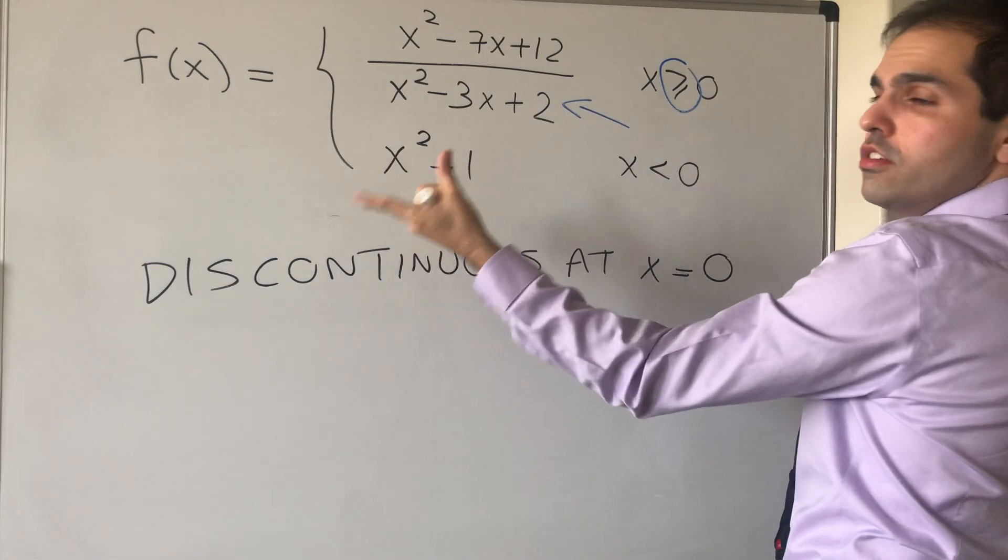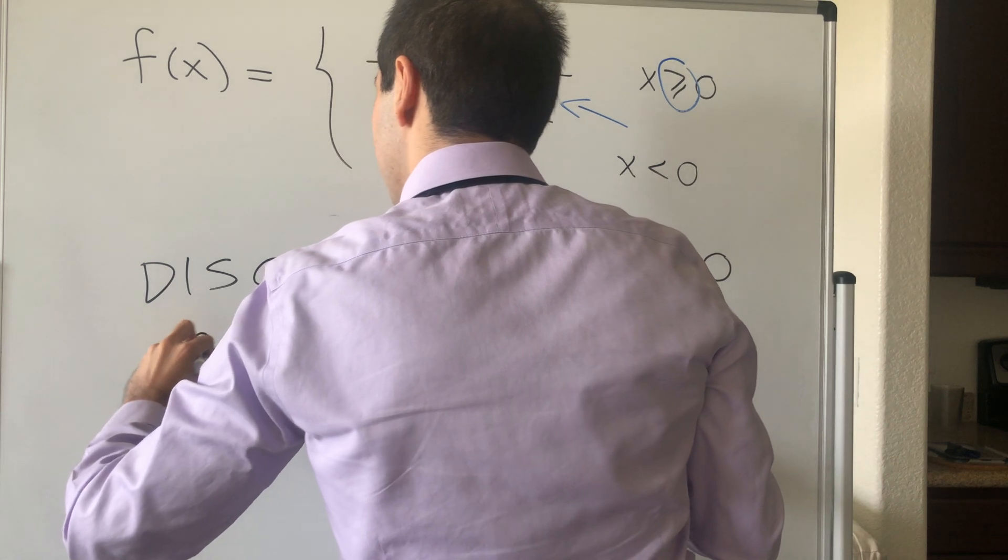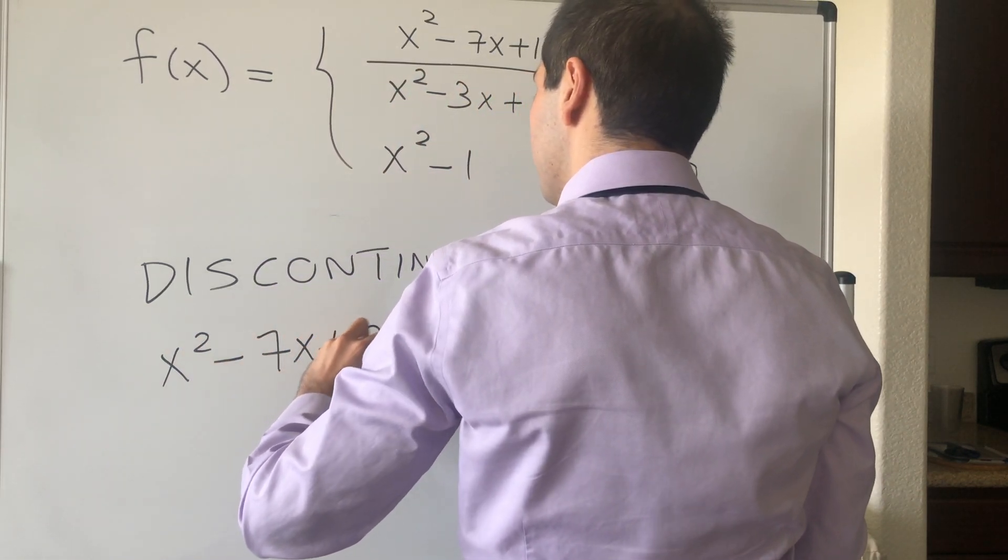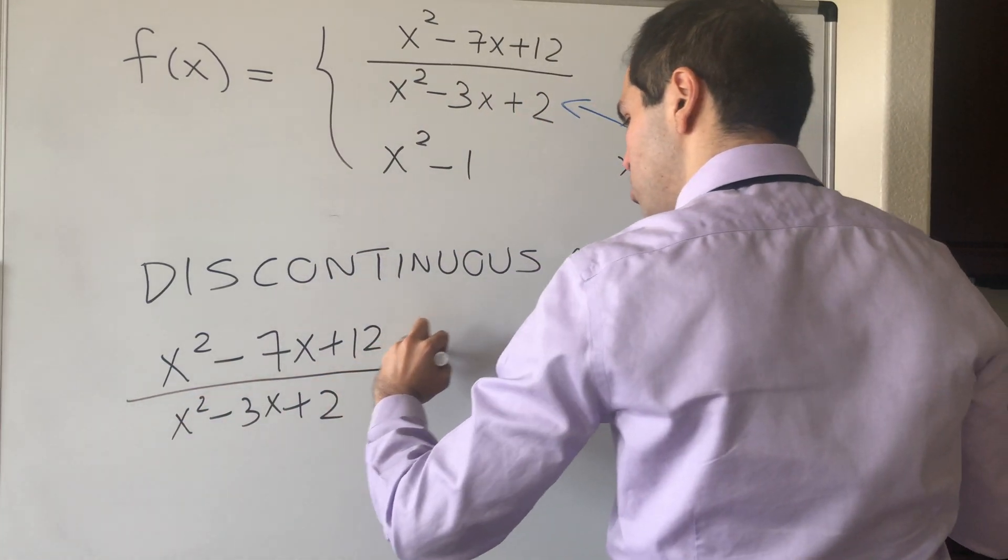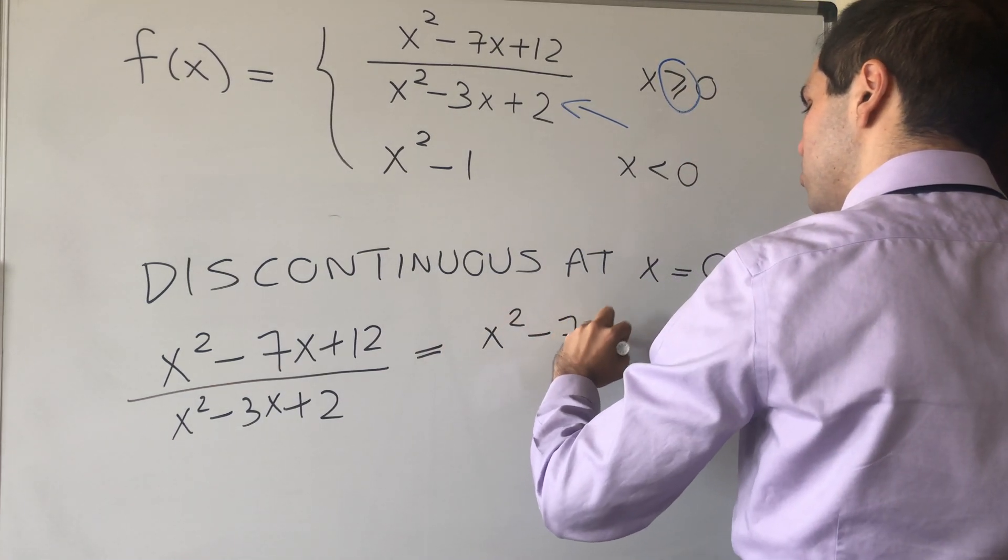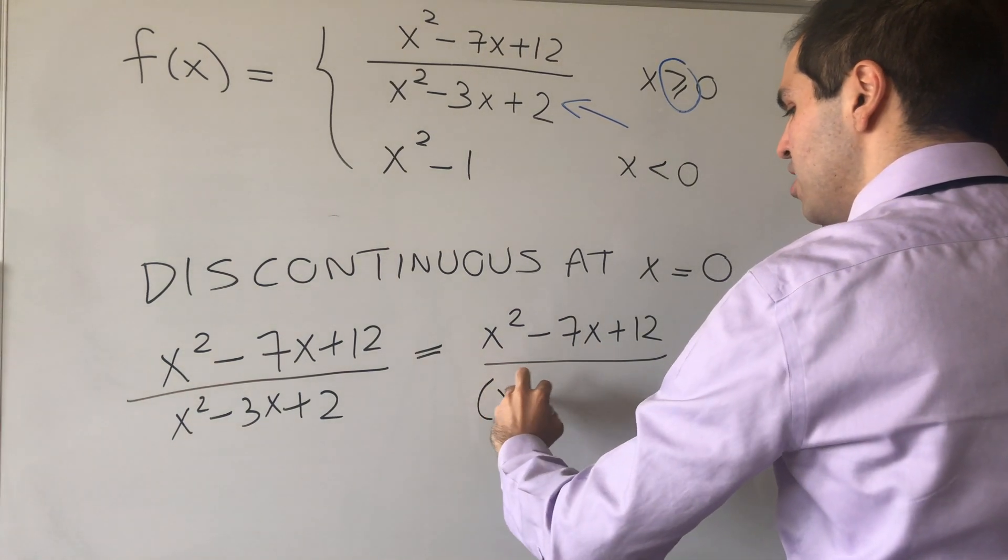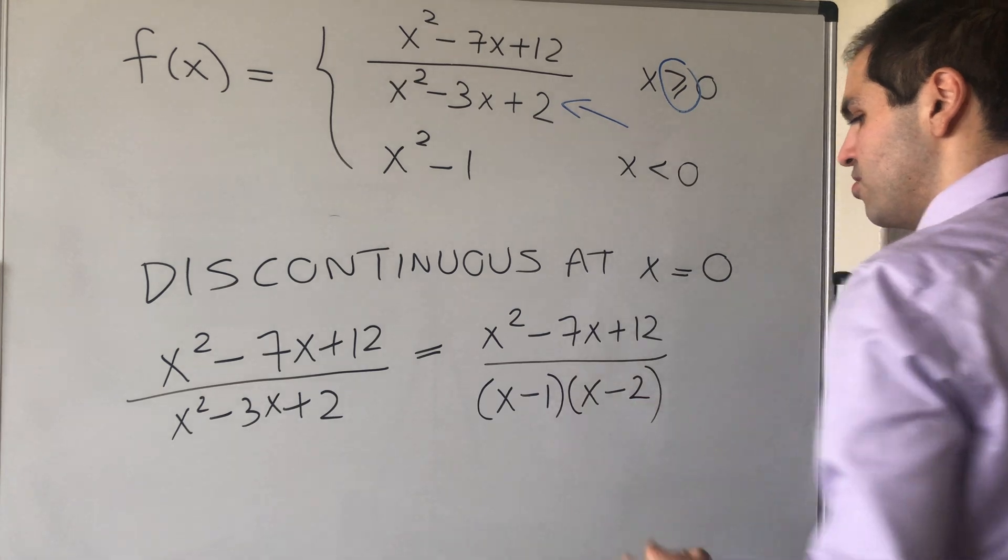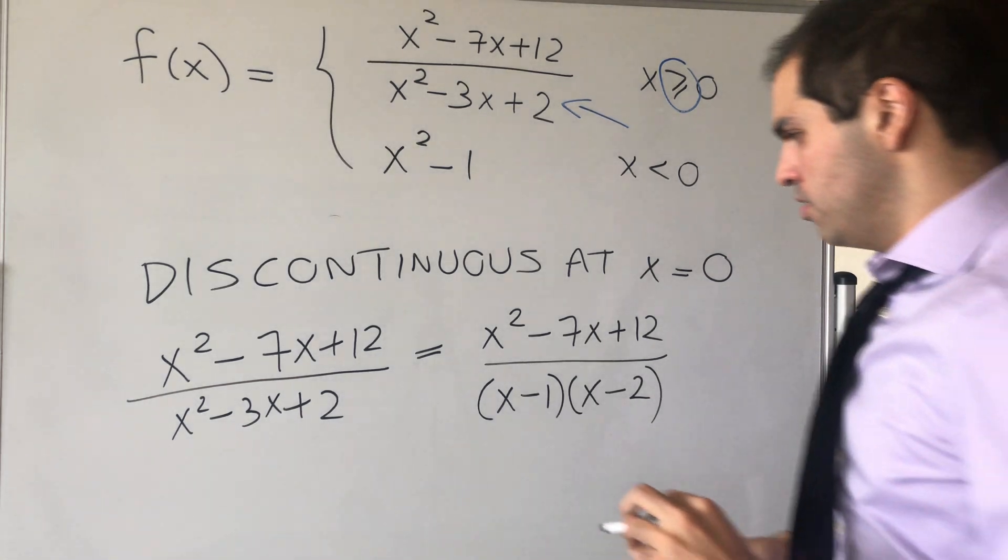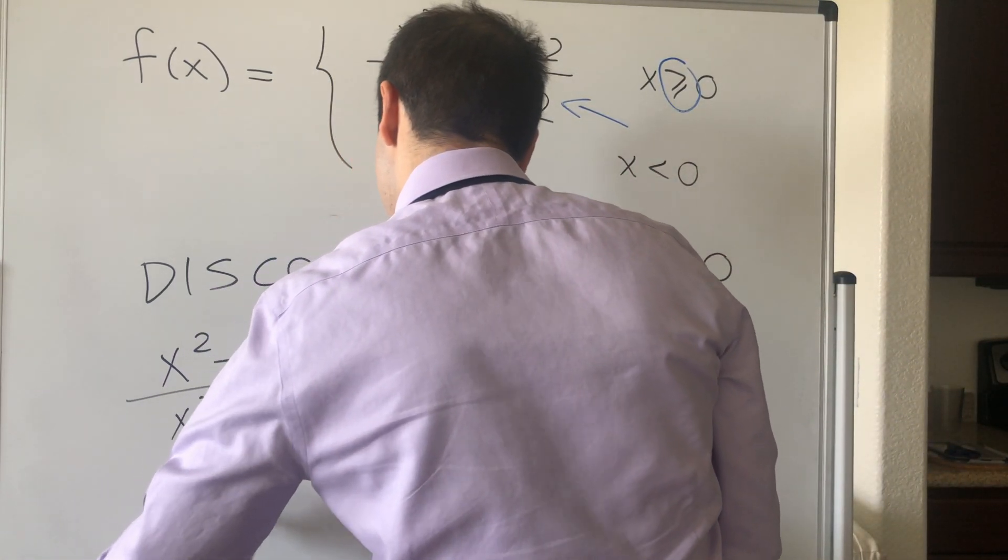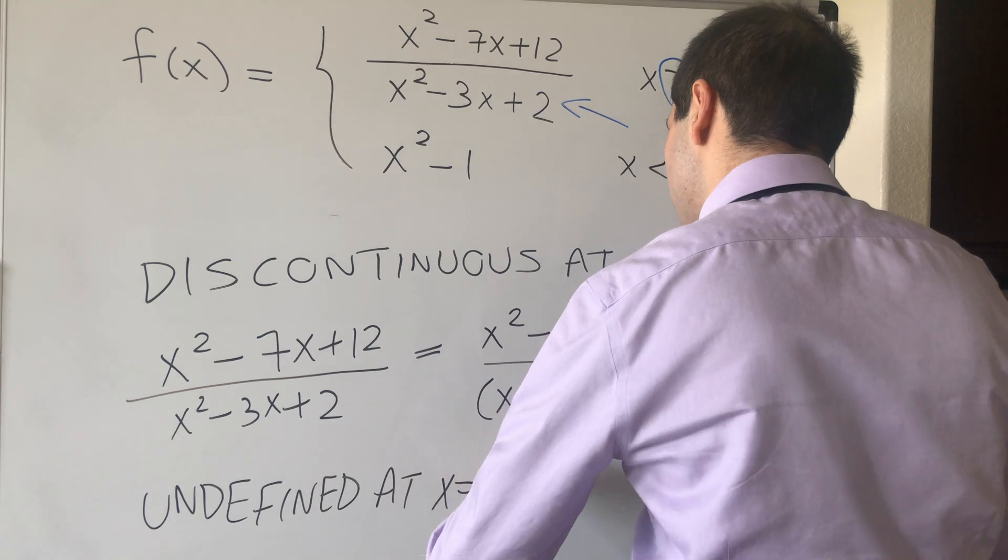In fact, let's look at this function to the right. So this one's not a problem. It is defined everywhere. So it is continuous at x negative. But let's look at x positive. So x squared minus 7x plus 12 over x squared minus 3x plus 2. Well, this becomes x squared minus 7x plus 12 over, let's factor out the denominator. I think it becomes x minus 1 times x minus 2. But this is not defined at 1 and 2. So undefined at x equals 1 and x equals 2.